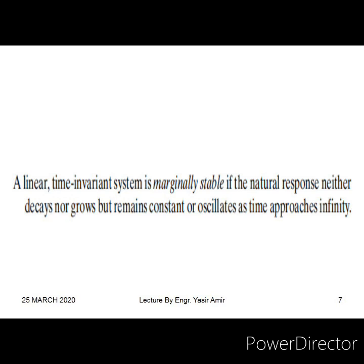Suppose we have a second-order undamped system with poles at j and minus j (omega equals one). When we give an input signal with frequency omega equal to one radian per second, the response of this system will start growing with the passage of time and become unbounded. Otherwise, the response remains bounded — neither decaying to zero nor growing — and that kind of situation is called marginally stable.